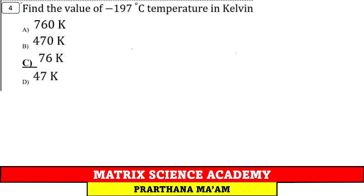Question number 4. Find the value of minus 197 degree Celsius into Kelvin. To convert to Kelvin, add 273 to the given value. Doing this gives us subtraction. Answer is 76 Kelvin, option number C.